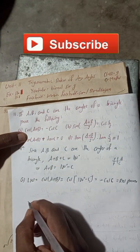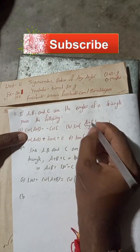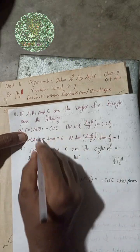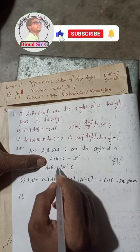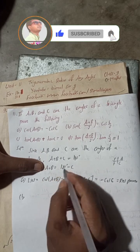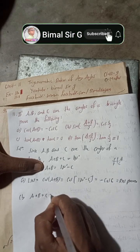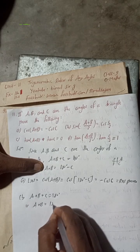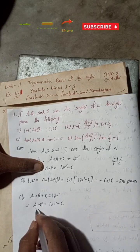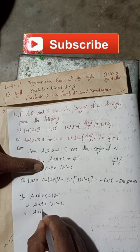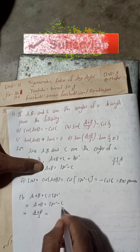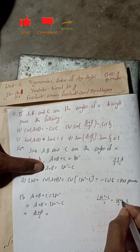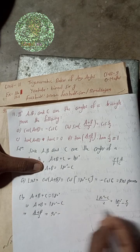Now number B. For number B, we need to work with (A+B)/2 and C/2. We have A+B+C = 180°, so A+B = 180° − C. Dividing both sides by 2: (A+B)/2 = 180°/2 − C/2, which gives (A+B)/2 = 90° − C/2.